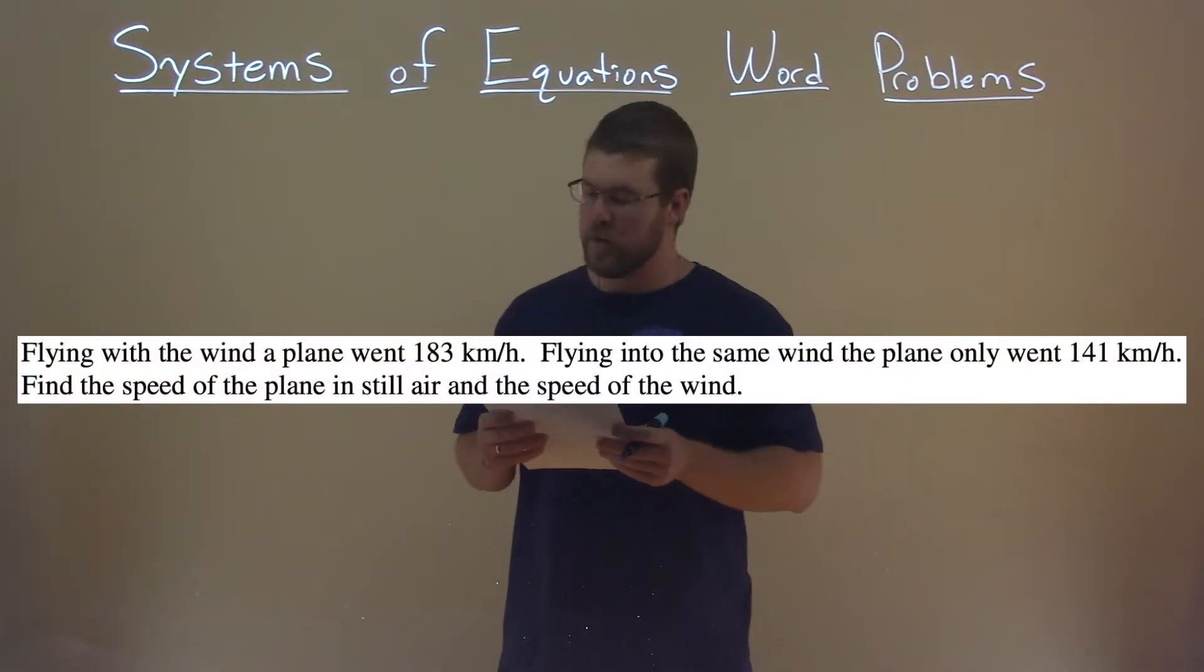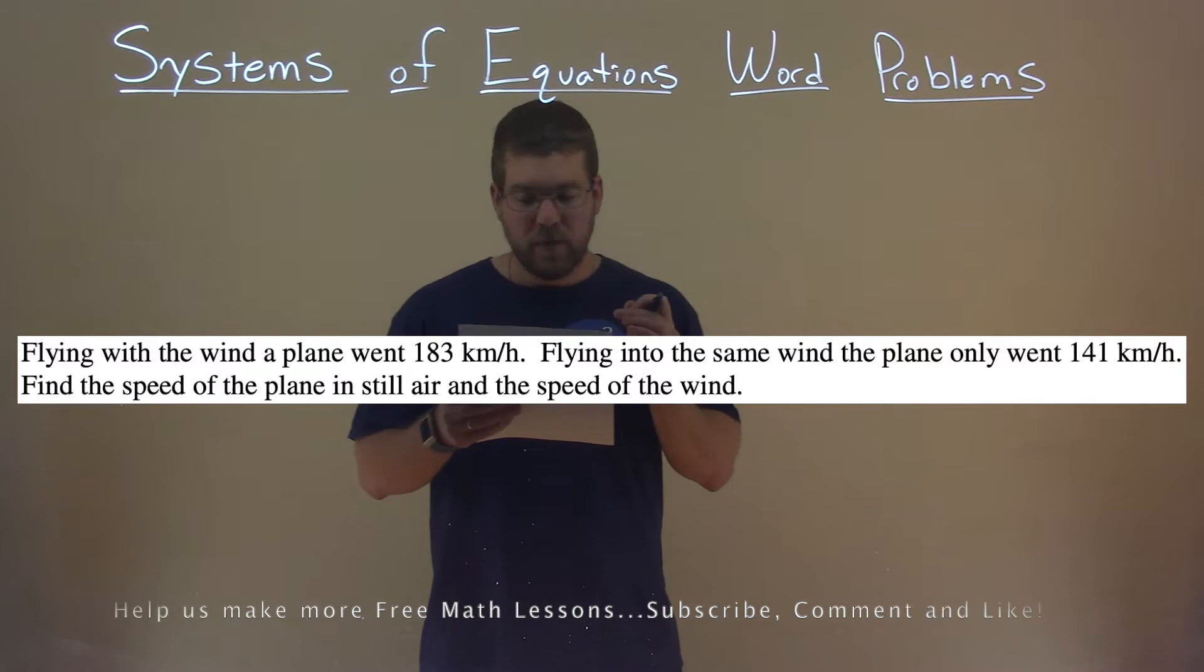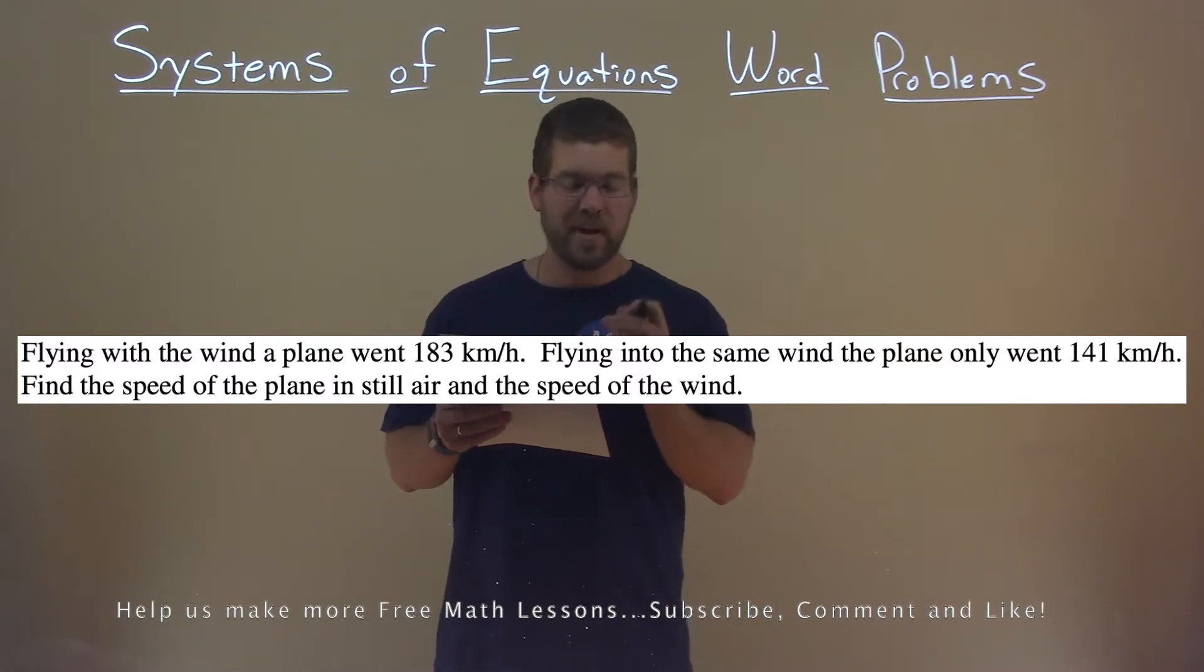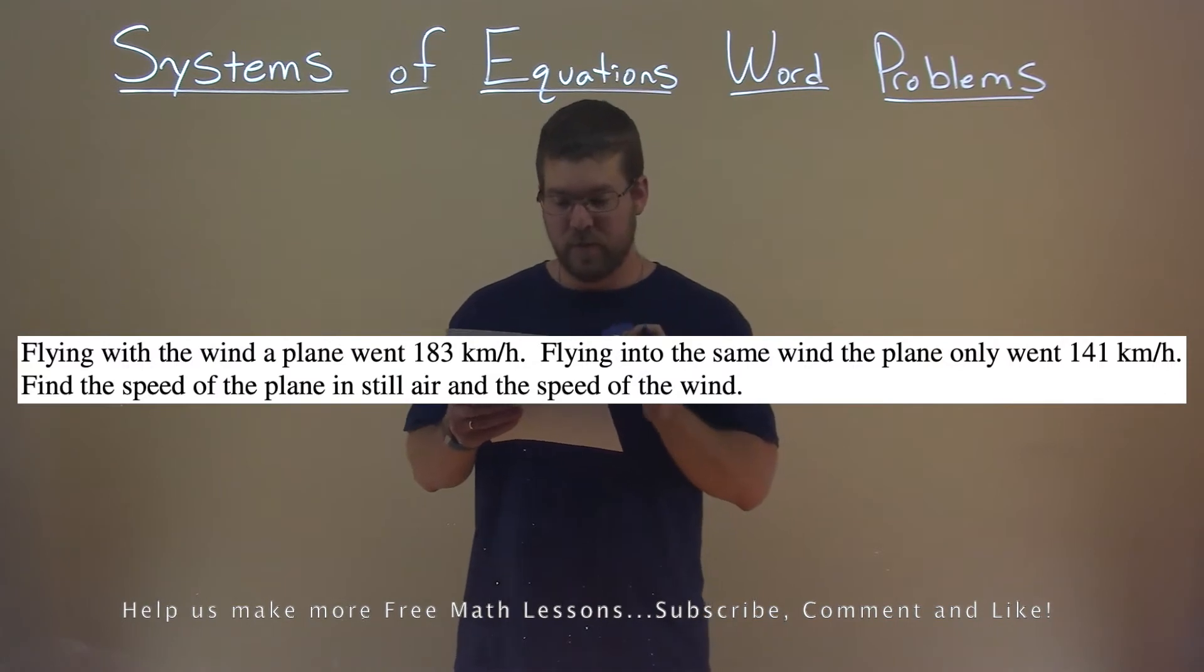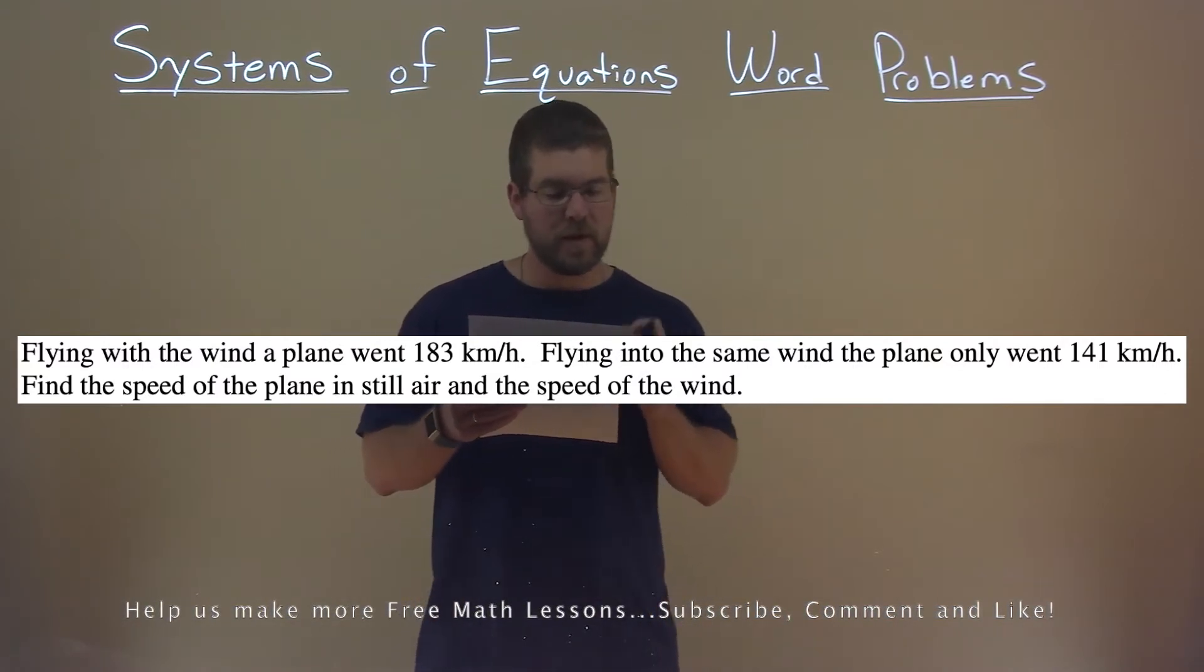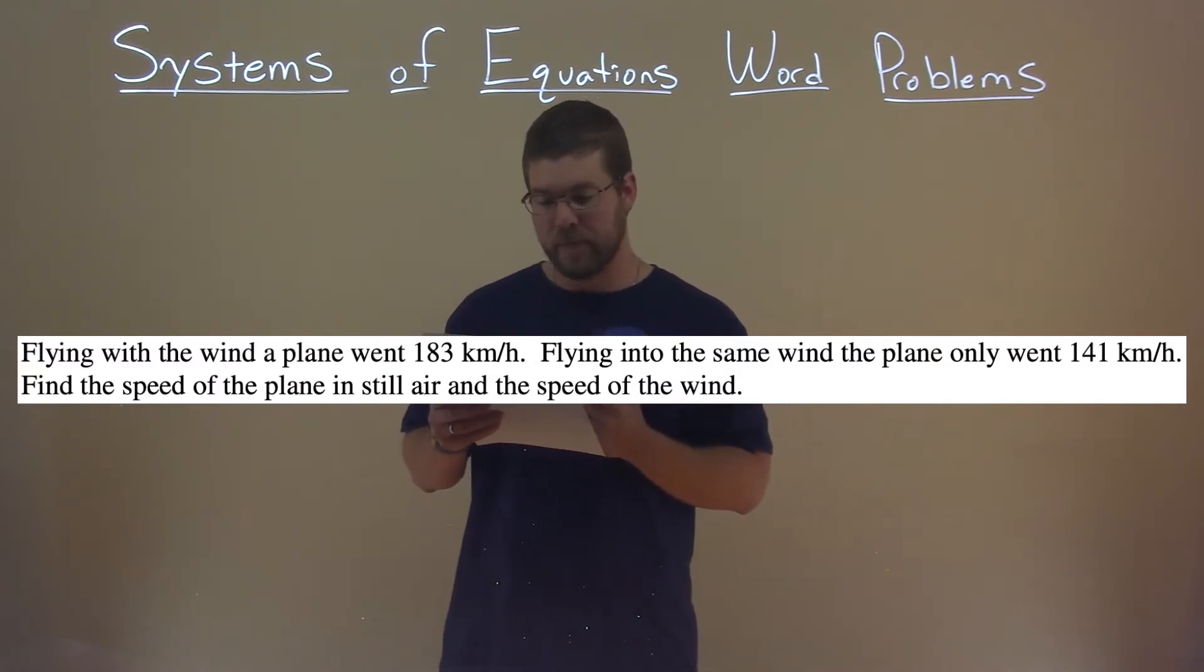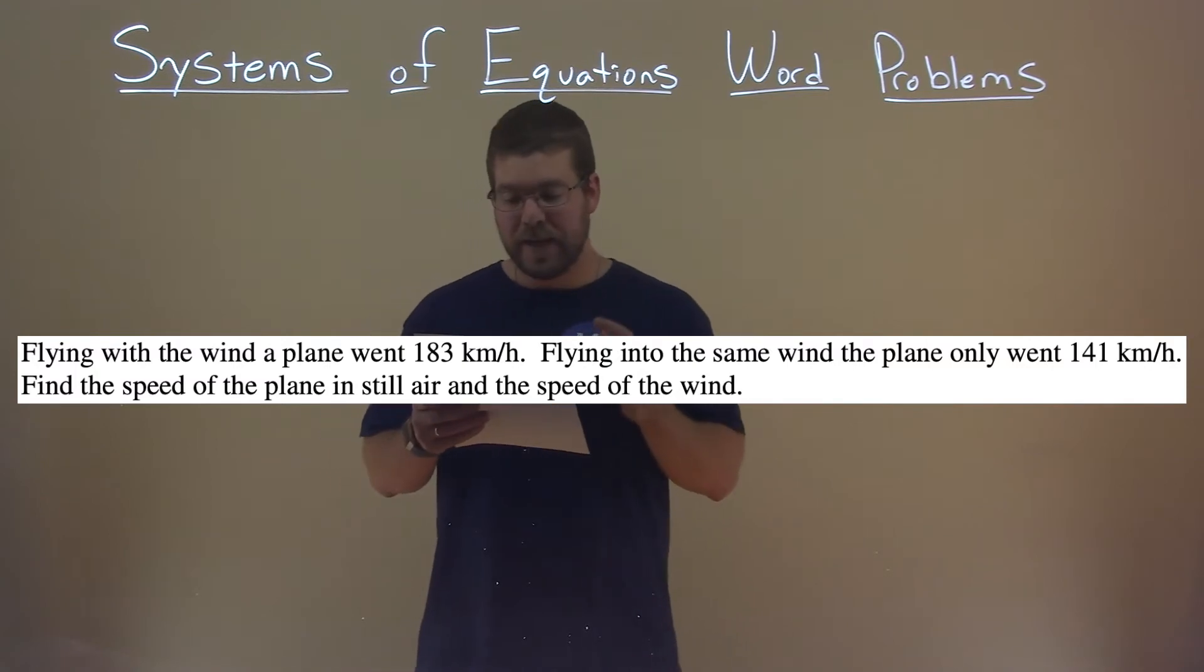We're given this problem right here. Flying with the wind, a plane went 183 kilometers per hour. Flying into the same wind, the plane only went 141 kilometers per hour. Find the speed of the plane in still air and the speed of the wind.